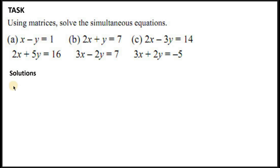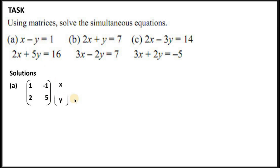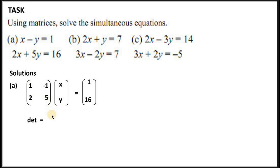Solutions for part (a): you make the simultaneous equations into two matrices. Here x has coefficient 1, y has coefficient negative 1; here x has coefficient 2, y has coefficient 5. You form a matrix, then pick x and y as a matrix, equals a matrix of 1 and 16. From there you find the determinant, which equals 1 times 5 = 5, minus 2 times negative 1 = negative 2, so 5 minus negative 2 = 5 plus 2 = 7.